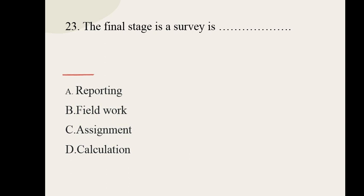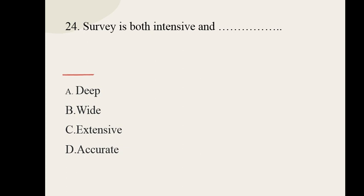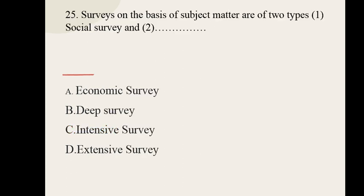Question number twenty-three: the final stage in a survey is dash. Options: reporting, field work, assignment, calculation. The correct option is reporting. Question number twenty-four: survey is both intensive and dash. Options: diff, wide, extensive, accurate. The correct option is extensive. Question number twenty-five: surveys on the basis of subject matter are of two types — one social survey and second dash. Options: economic survey, deep survey, intensive survey, extensive survey. The correct option is economic survey.